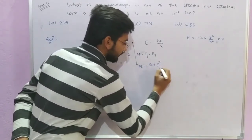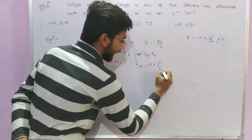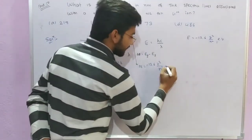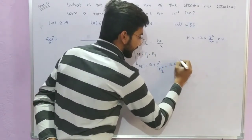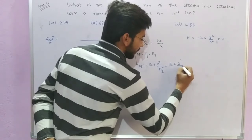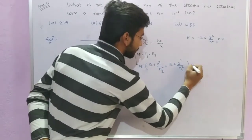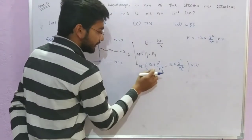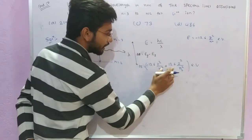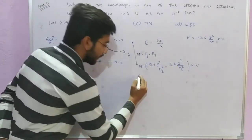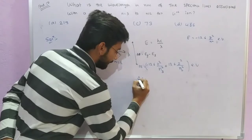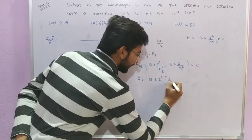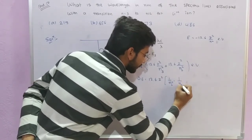Minus sign will be there, so it becomes plus 13.6 z² upon n₂². This gives us electron volts. Now you have to calculate: Delta E equals 13.6 z². Take z² common, so delta E becomes 13.6 z² bracket containing (1 upon n₂² minus 1 upon n₃²) electron volts.